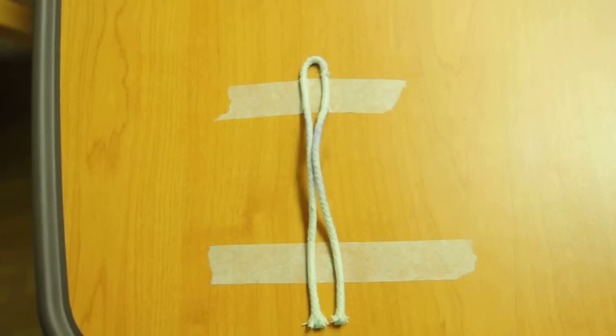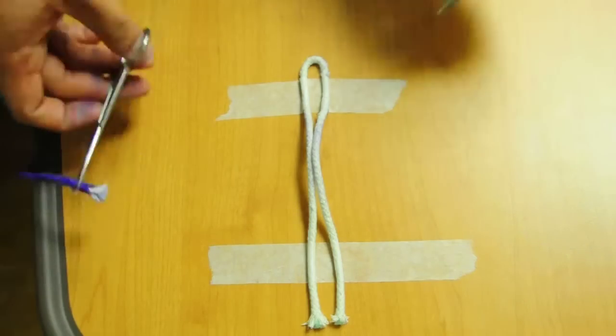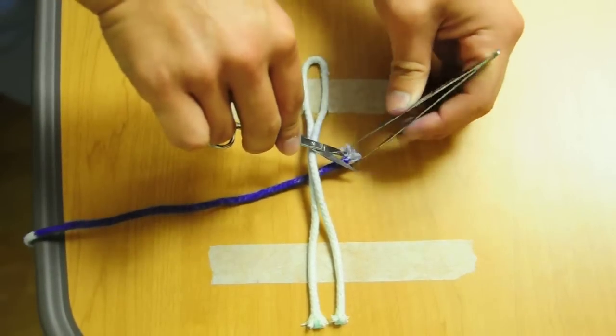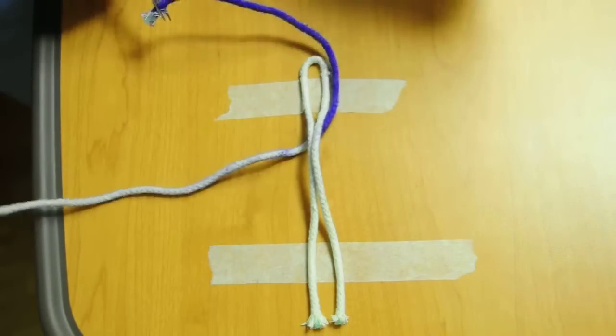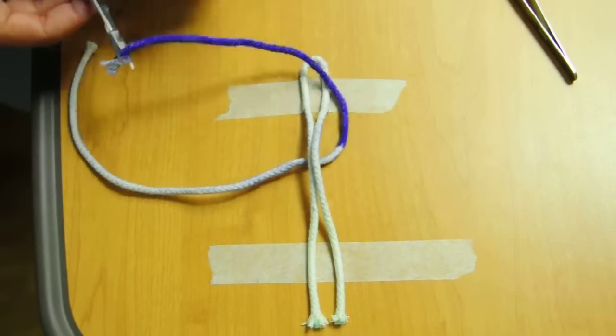So this happens all the time. Say I'm on the attending side of the table. I throw the suture, grab it, pull it through. I'm like, hey resident, why don't you tie that for me? And so now what do you do?